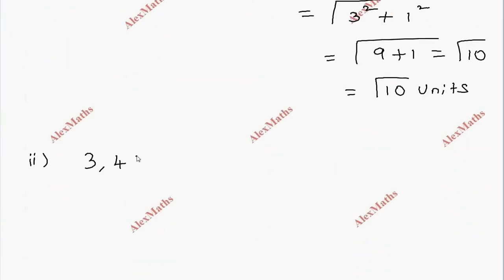So it will be the square root of 3 squared plus 2 squared. The points are (3, 4) and (-7, 2).